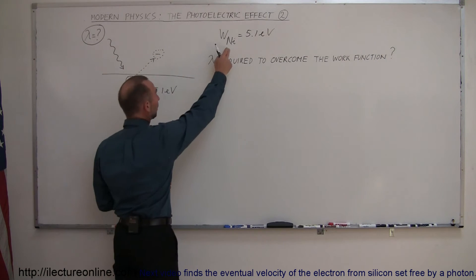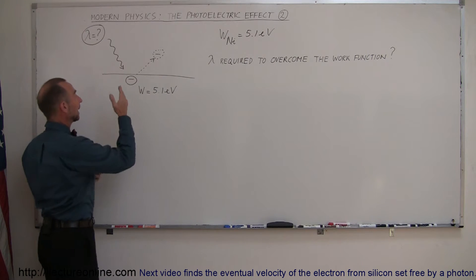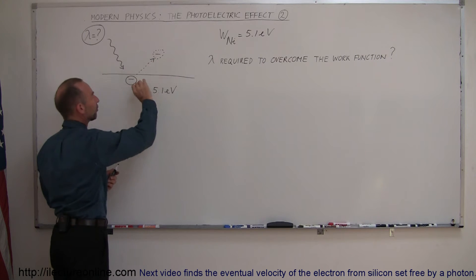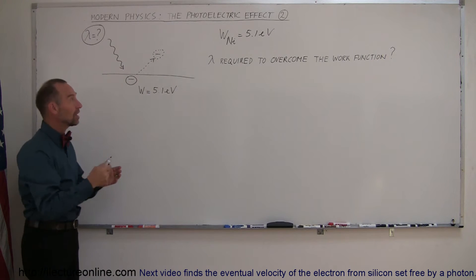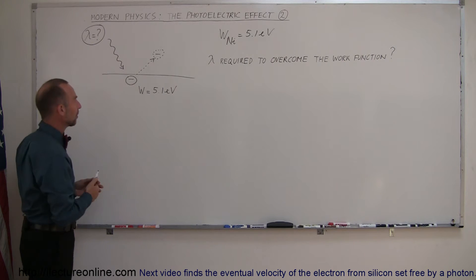we're dealing with nickel, and so the work function for nickel is 5.1 electron volts, which means that the energy imparted on an electron must be at least 5.1 electron volts for it to jump free. Any additional energy that it receives will be used for the kinetic energy of the electron as it flies away from the metal.